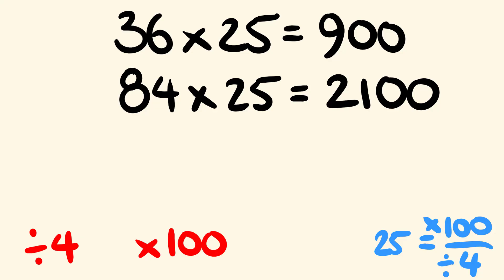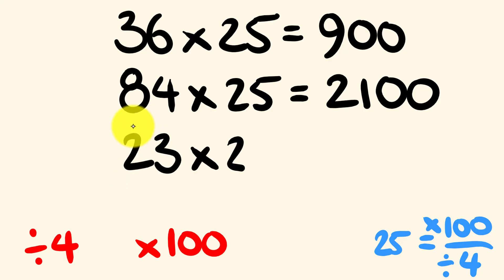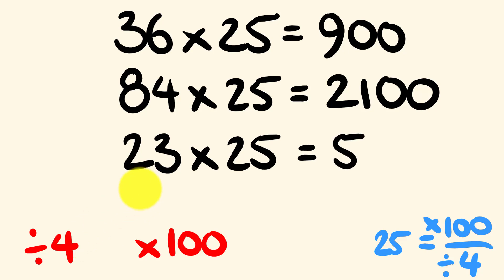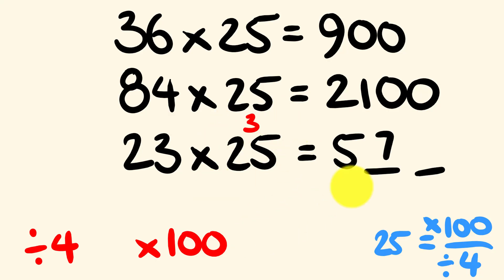Now I'm going to put one in with a remainder. Let's look at 23 multiplied by 25. How many times does 4 go into 23? 4 goes into 23 five times with 3 remainder, since 5 times 4 is 20. Now we have 3 times 25, because we're multiplying by 100 — put those two spaces there. 3 times 25 is equal to 75, and we add that on. So 23 times 25 is 575.